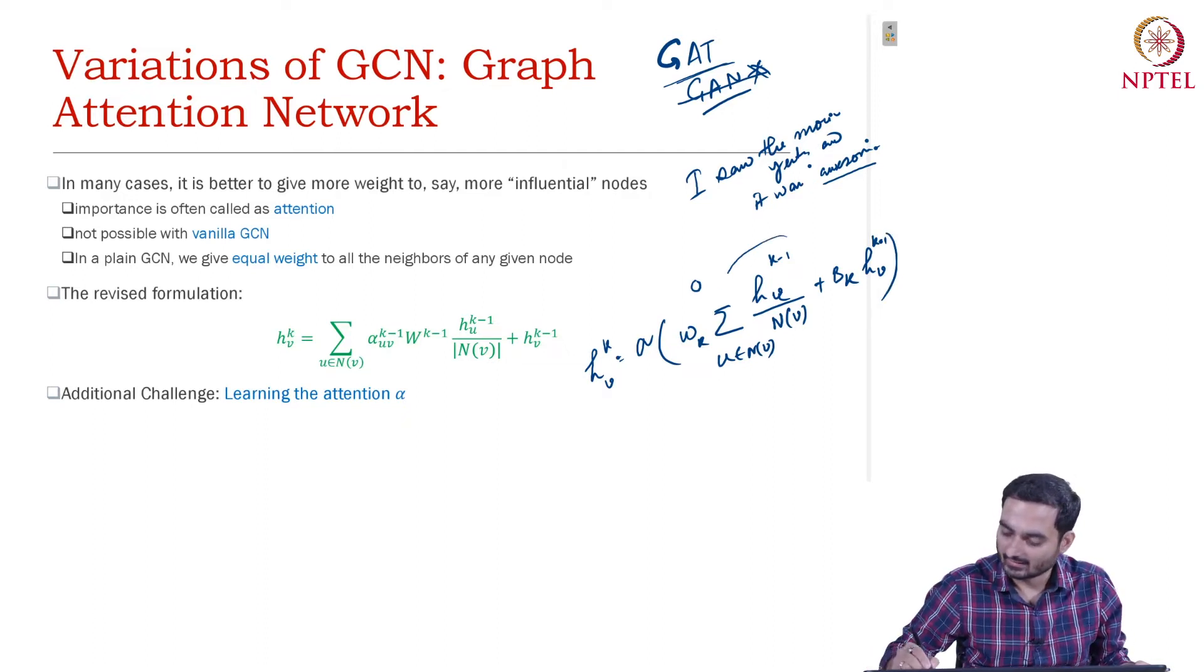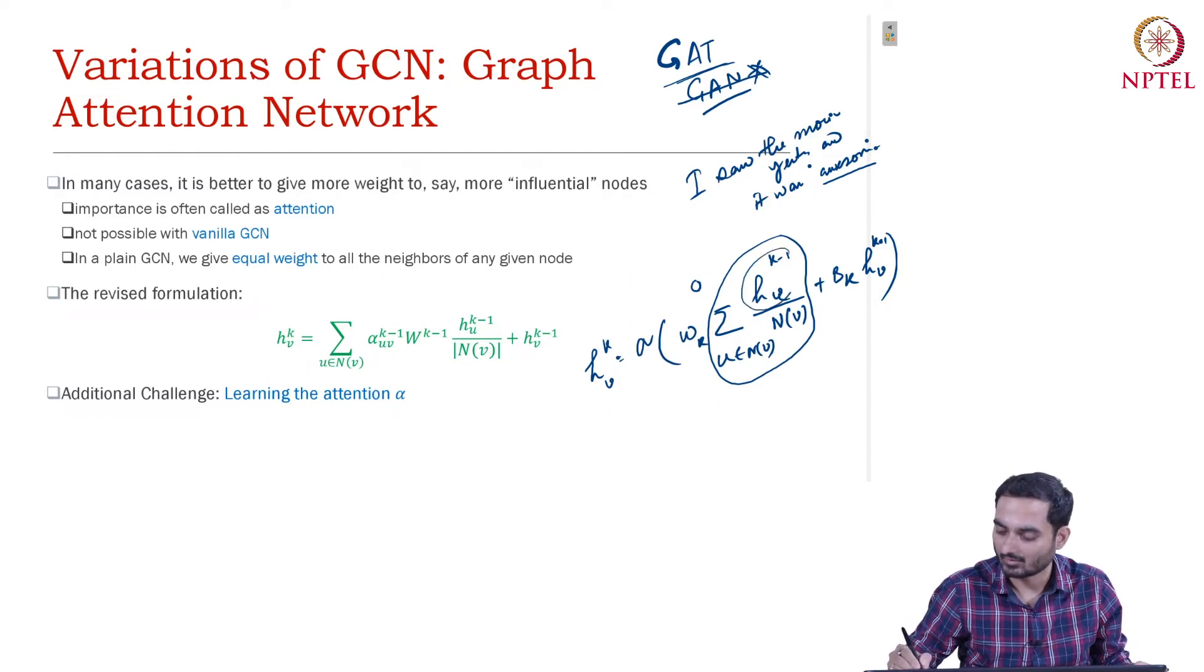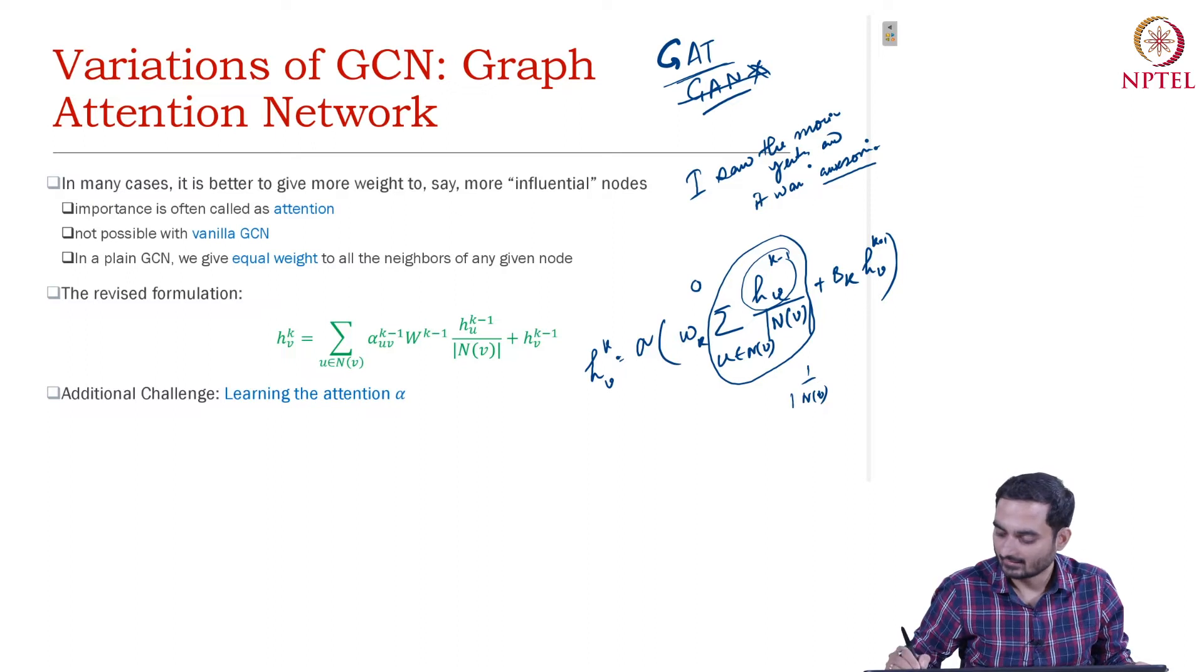If you think of this aggregation operation, this is essentially mean and the weight of every component is 1 by n_v. This is a set, and this 1 by n_v is the weight for every neighbor.